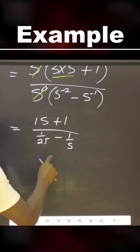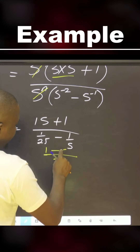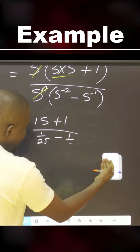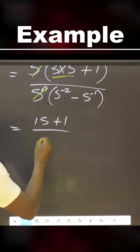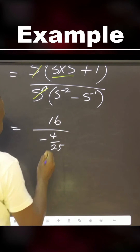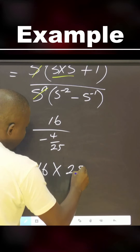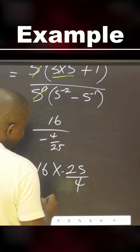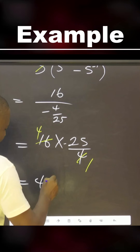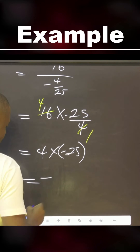Let's deal with this denominator. The common denominator is 25. This gives us 1 minus 5, which is minus 4, over 25. So I can come here now to say minus 4 over 25. Then I have 16 over that — putting minus here, 1 here, 4 here — it means therefore I have 4 multiplied by minus 25, which is minus 100.